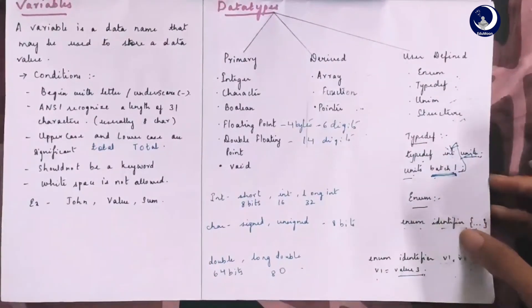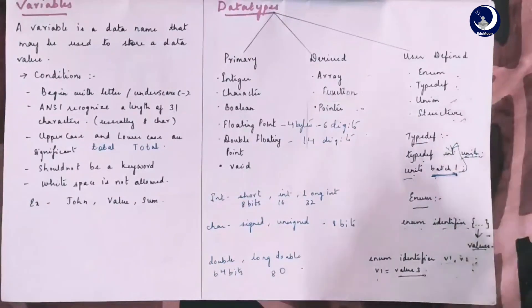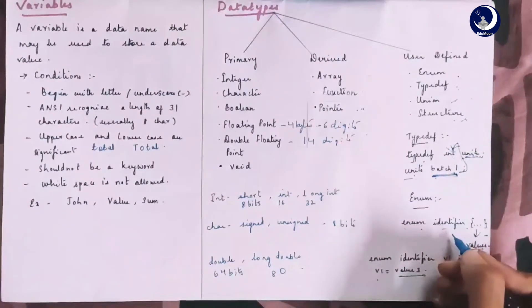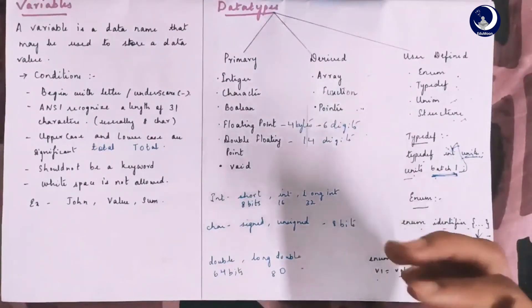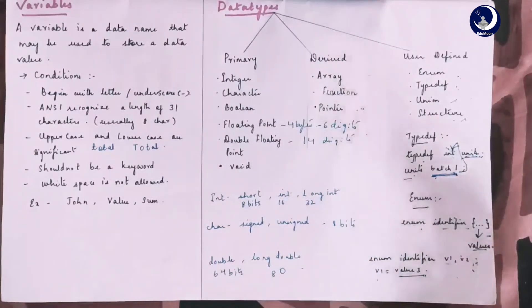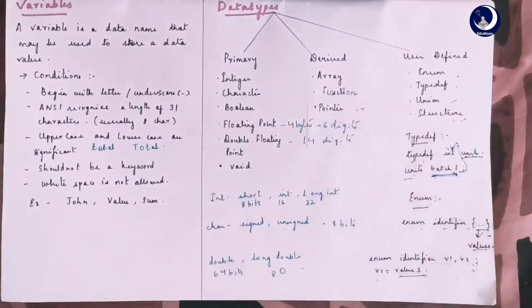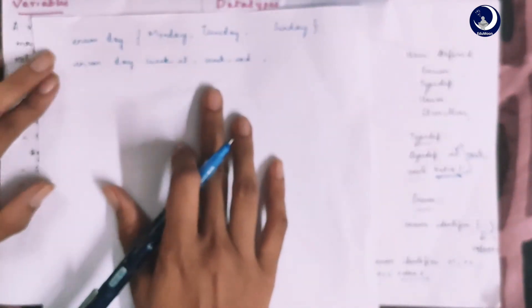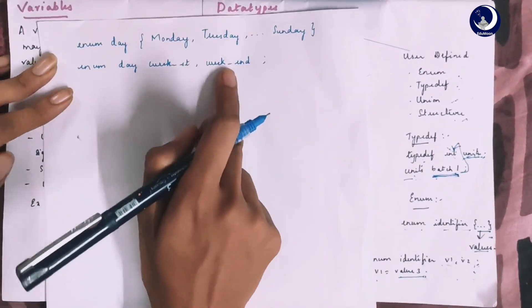Coming to enum. Enum is also called as enumerated data types. The identifier is a user defined enumerated data type which can be used to declare variables that can have one of the values enclosed within the braces. Consider the given example, enum day, weekst, weekend.